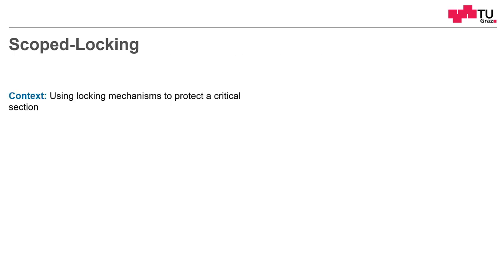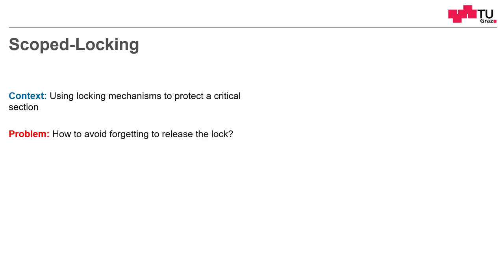The context is that we have to protect a critical section and we are using locks for that. The problem is how can we avoid forgetting to release these locks. For simple functions this is easy, but sometimes you have multiple return points, and maybe exception handling — then it's not that easy.